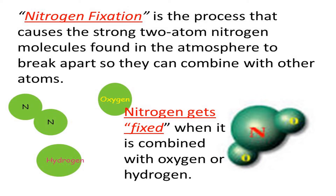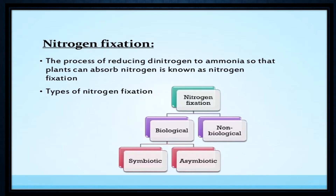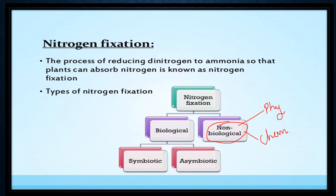Moving on, there are three types of nitrogen fixation: biological nitrogen fixation and non-biological nitrogen fixation. Non-biological fixation has two types: physical (atmospheric) and chemical. In biological fixation, there are another two types — symbiotic and asymbiotic.